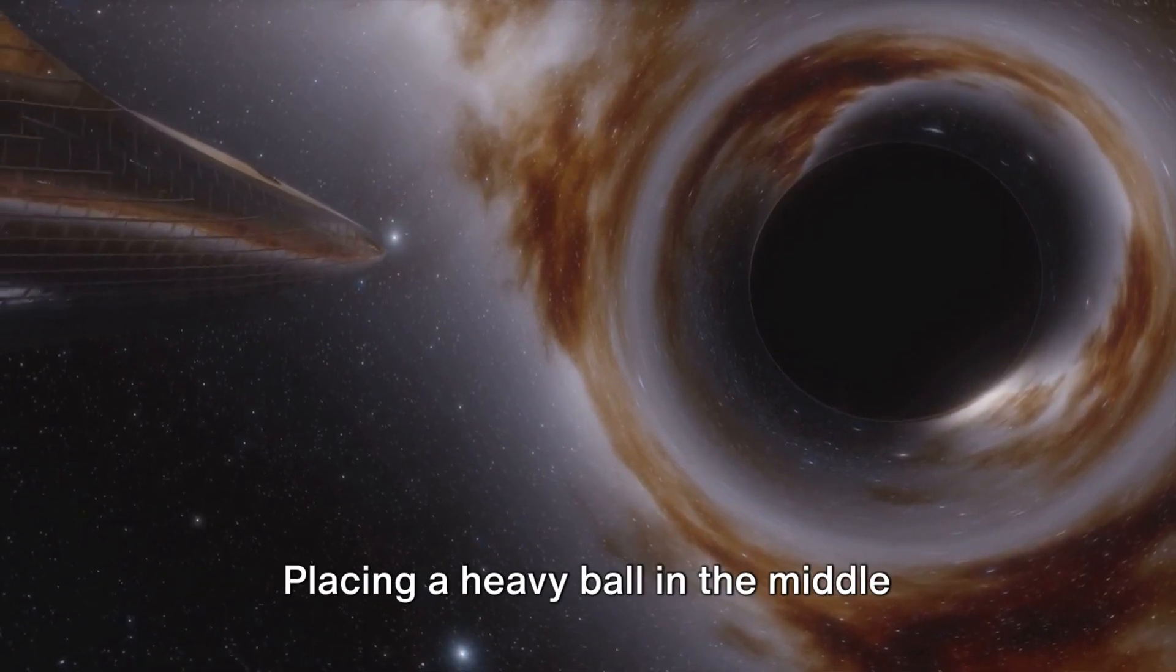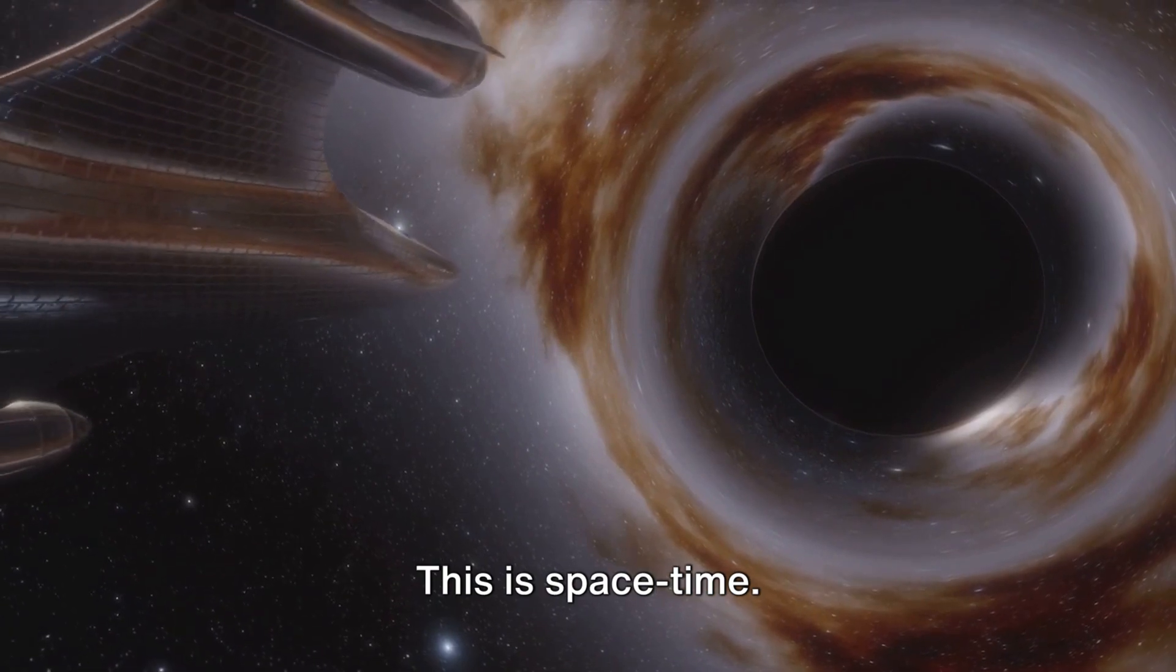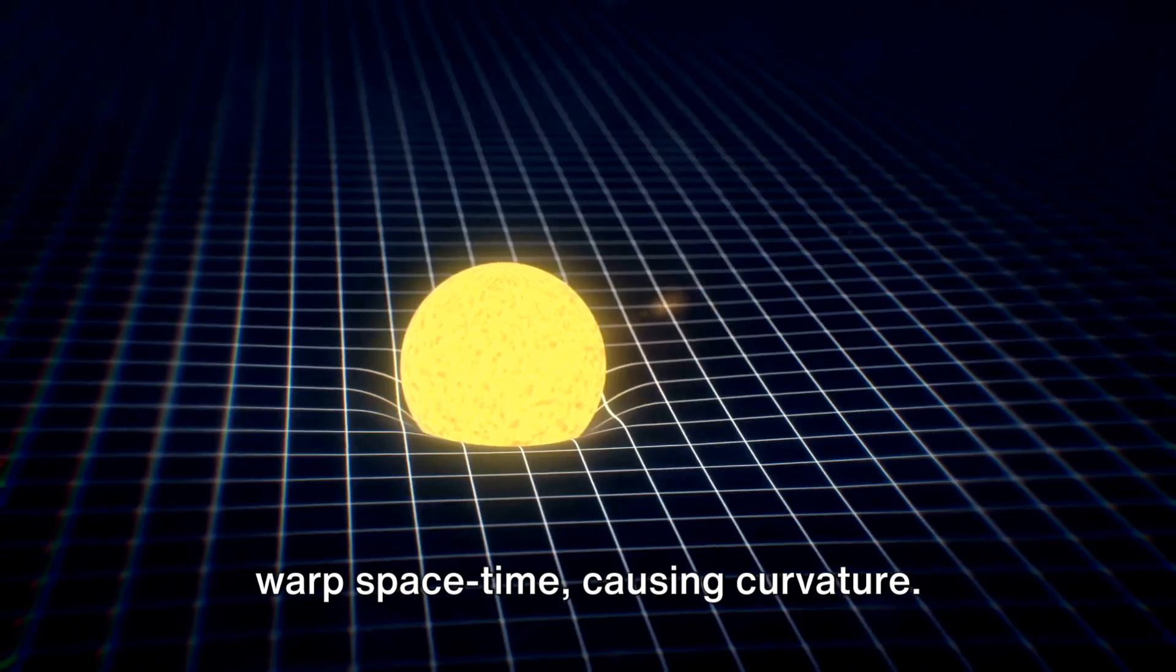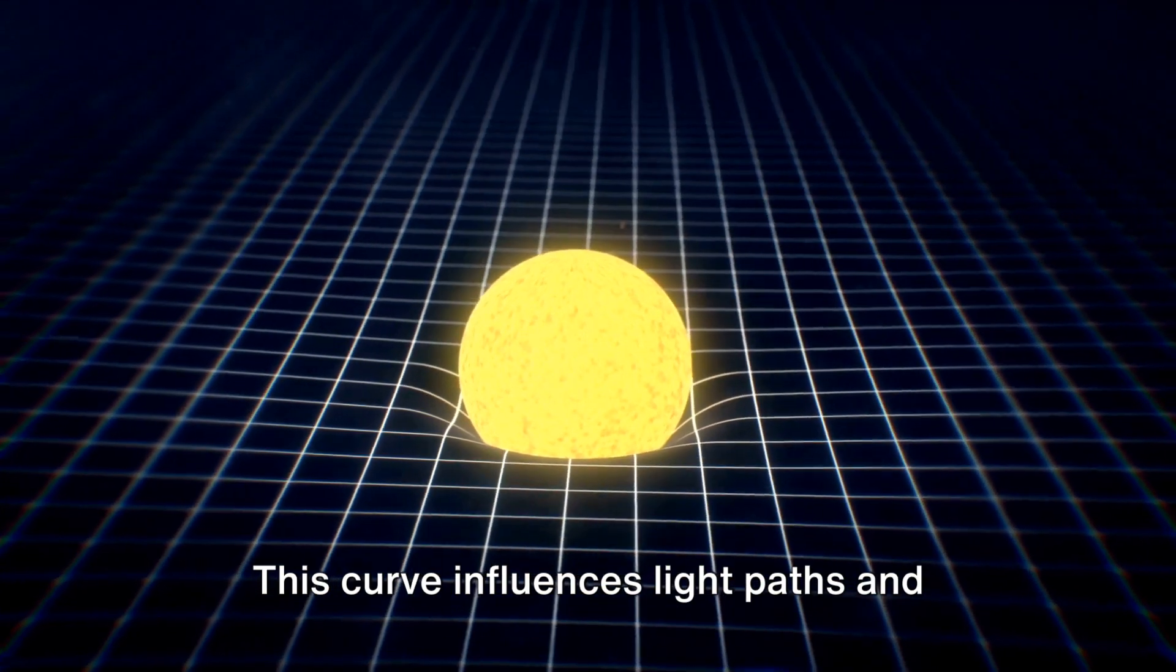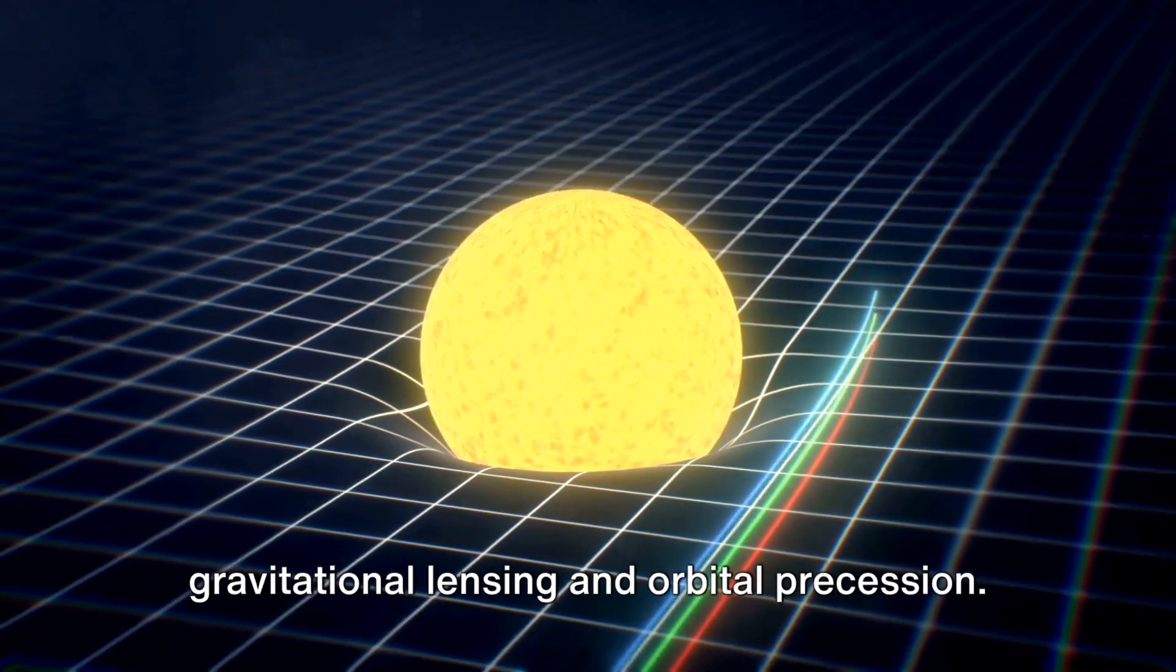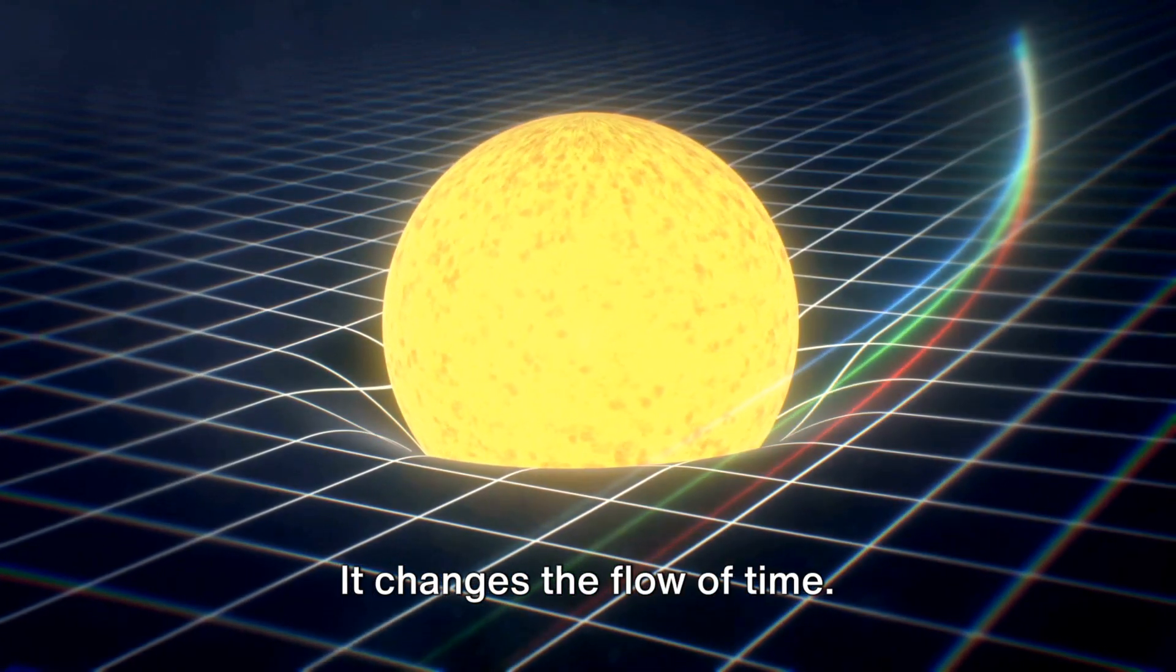Picture a rubber sheet. Placing a heavy ball in the middle creates a dent, bending the sheet. This is spacetime. Massive entities like stars and galaxies warp spacetime, causing curvature. This curve influences light paths and object movement, causing phenomena like gravitational lensing and orbital precession. It changes the flow of time.